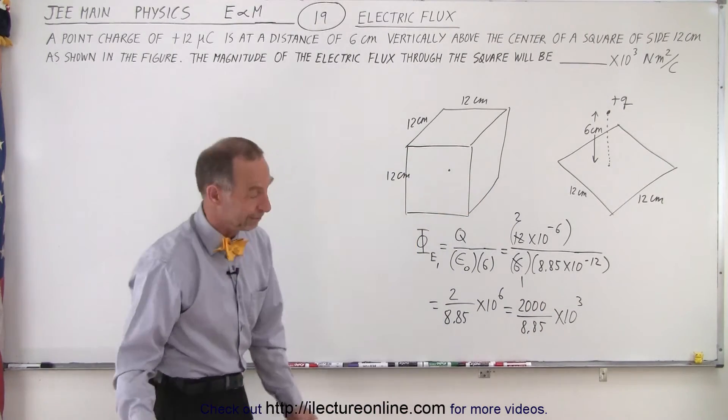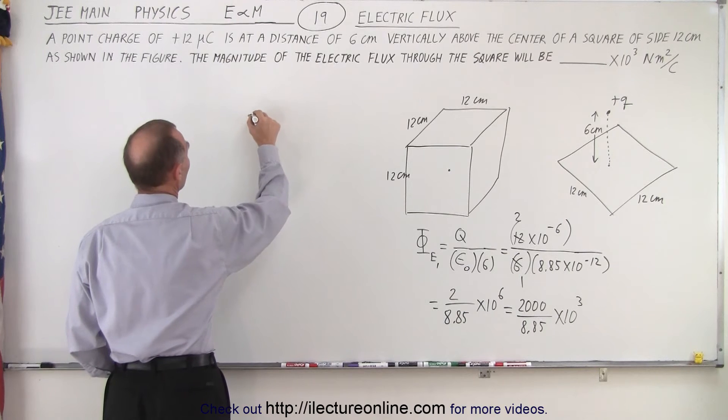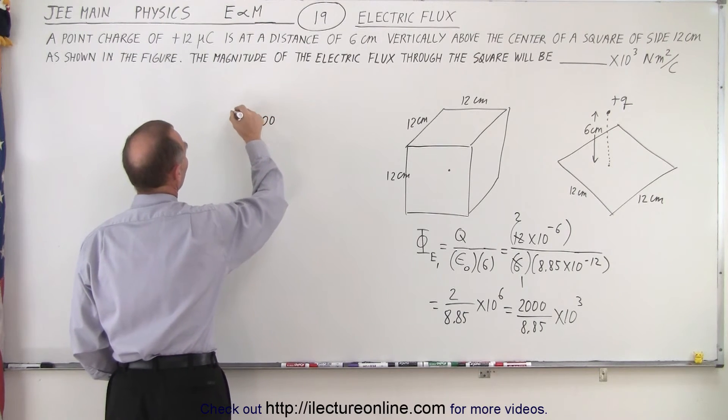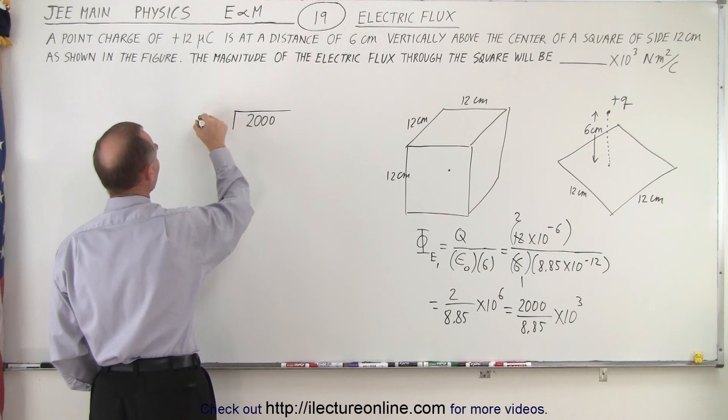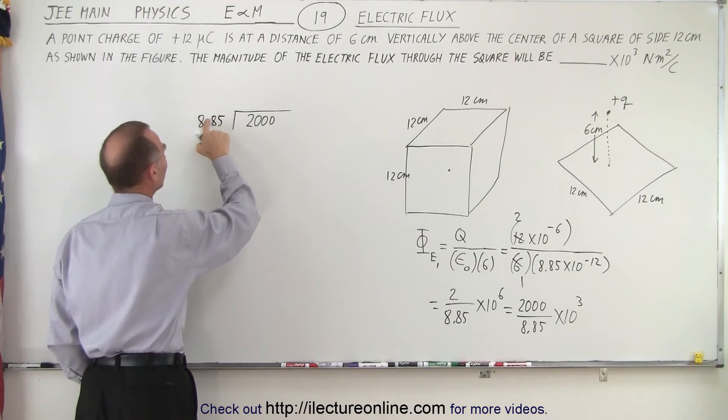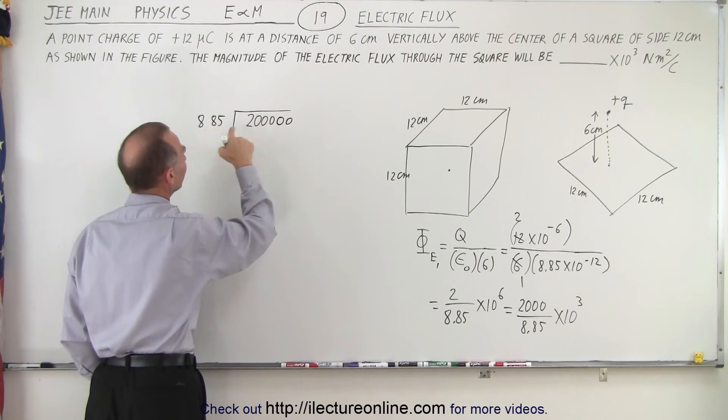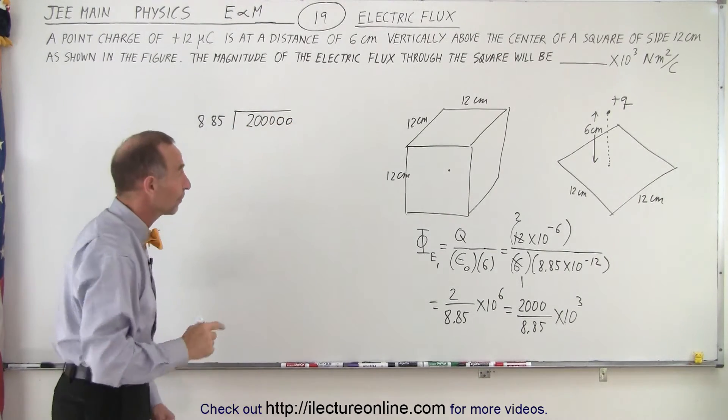And now all we have to do is evaluate this. And we don't have a calculator. So what we have to do is longhand division. So we take 2,000 and we divide it by 8.85. But then we don't want the decimal there. So we multiply this by 100. We add a couple of zeros. Now we divide 885 into 2,000.